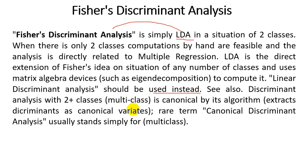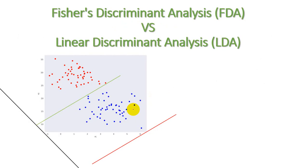Now let us look at the math behind Fischer Discriminant Analysis and how it works. In this scenario, we assume we have a scatter plot where some red dots represent class 1 and blue dots represent class 2. The purpose of using FDA is that we have two classes and we want to separate them using Fischer Discriminant Analysis.